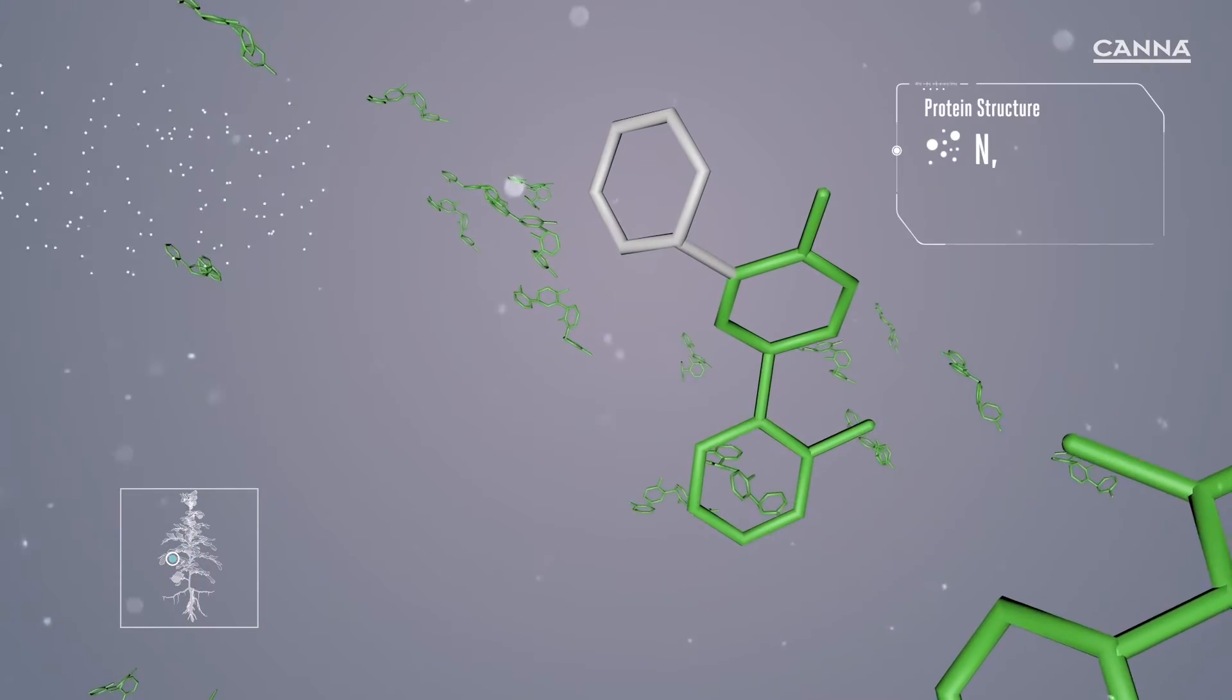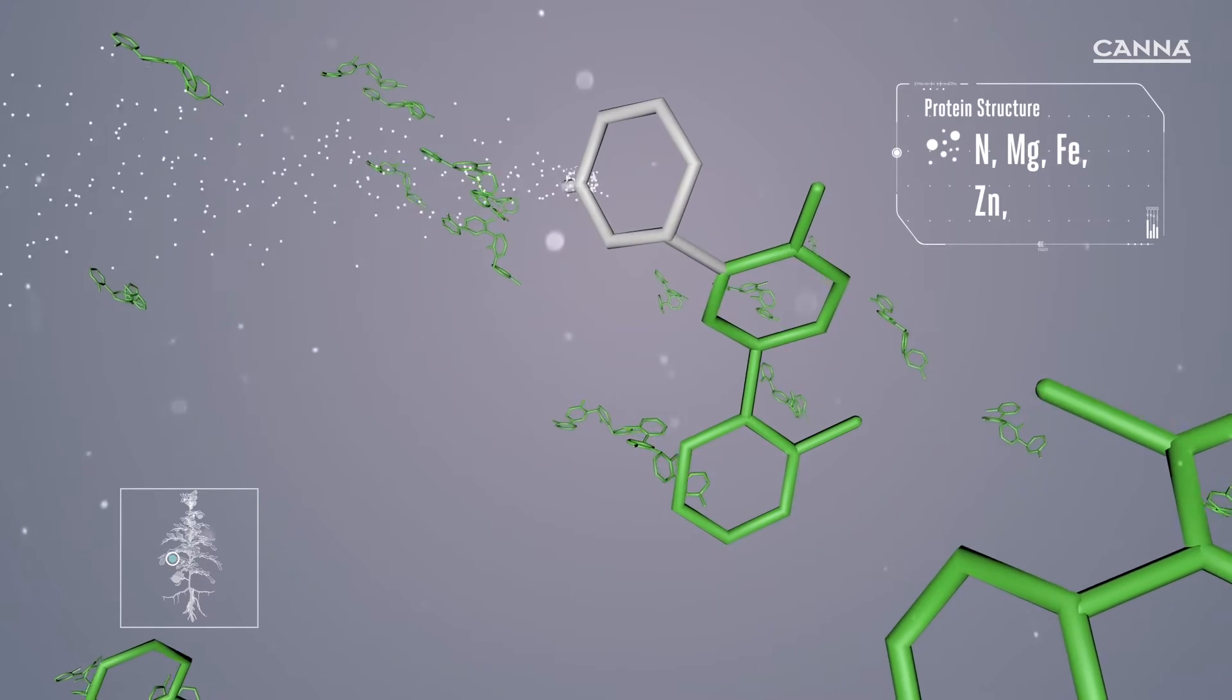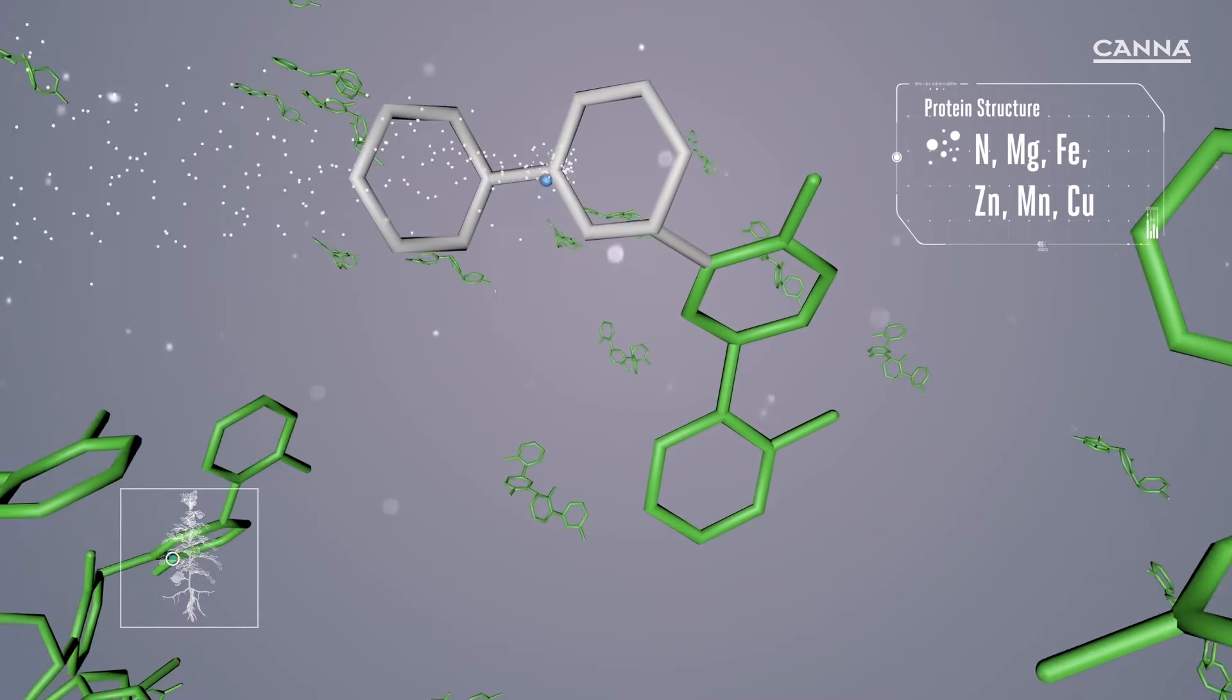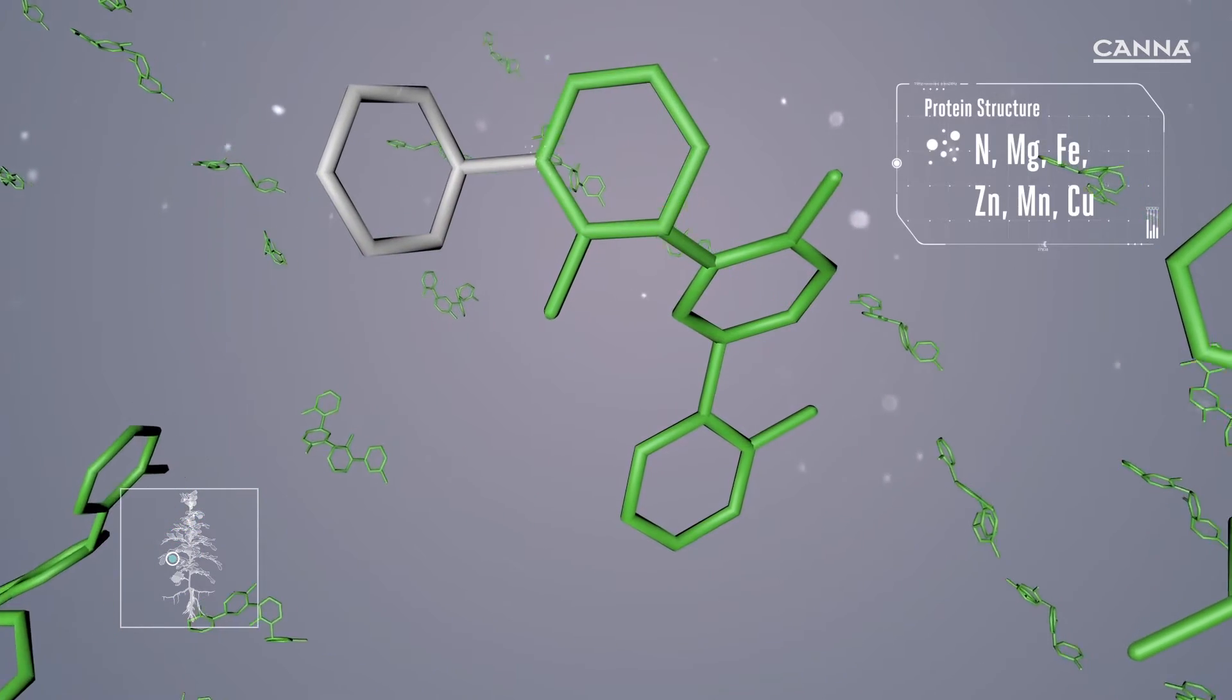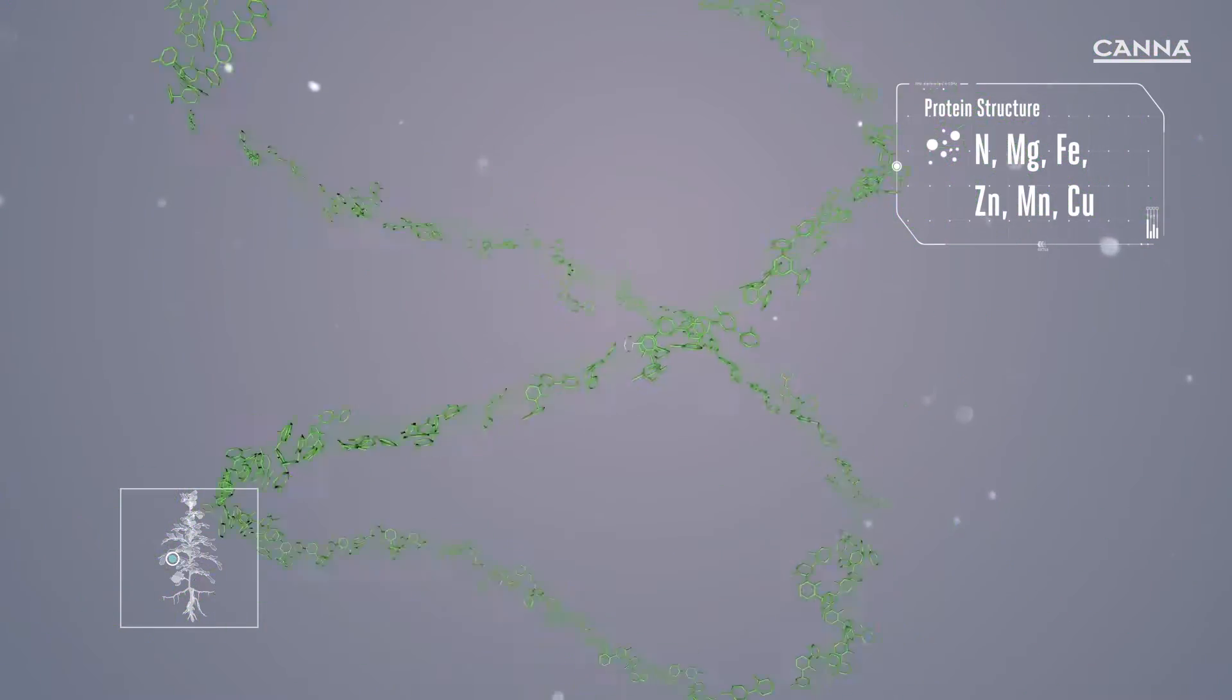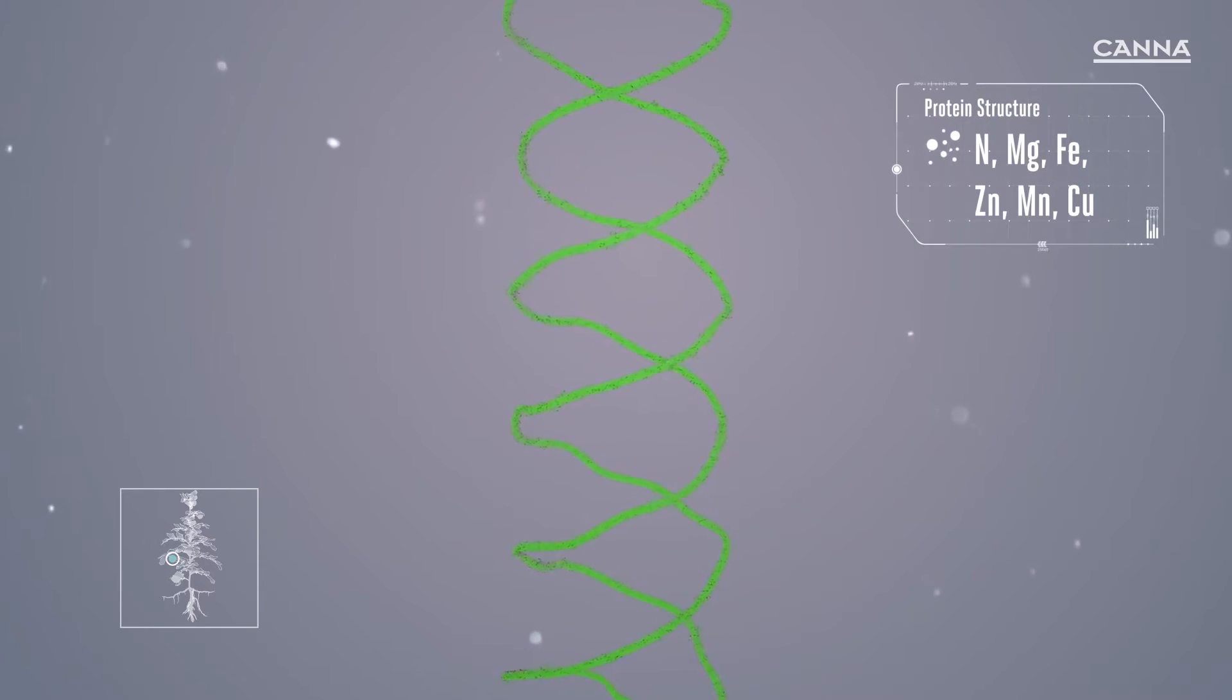When a new cell has been created, the other elements start to flow in. These elements attach themselves to the protein structure and this forms a kernel which turns green. The nitrogen and the metals together create the chlorophyll of the leaves.